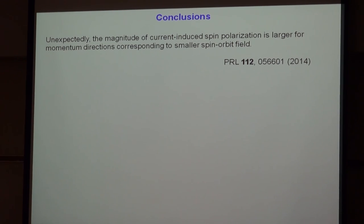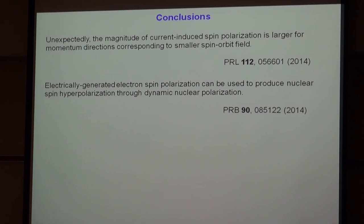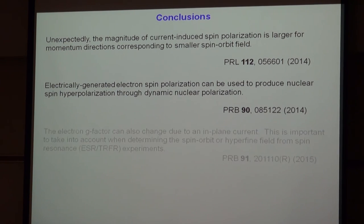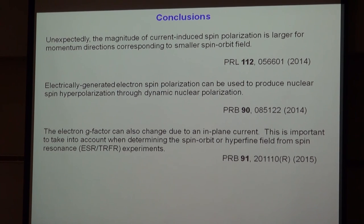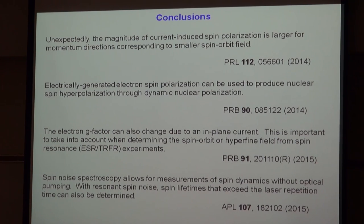To summarize: we first talked about electrically generated spin polarization and how we found unexpectedly that it was larger for directions corresponding to smaller spin-orbit fields. We then showed how that electrically generated spin polarization could produce a nuclear spin polarization, and also how the electron g-factor can change with an in-plane current — an effect important to take into account when doing electron spin resonance or time-resolved Faraday rotation measurements to measure the spin-orbit field. Finally, I showed our results of spin noise spectroscopy and how we use a resonant spin noise technique to measure spin lifetimes that exceed the laser repetition period.